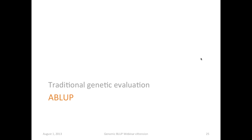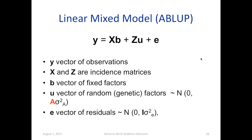Let's move to traditional genetic evaluation using the pedigree and phenotype. This is just a review — I'm sure everybody is somewhat familiar with that topic. This is just a reminder, and then we'll transition to genomic BLUP to see the differences.